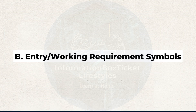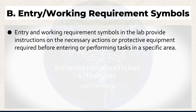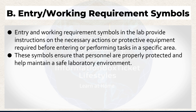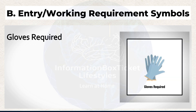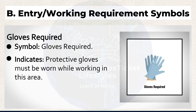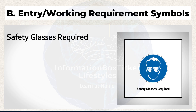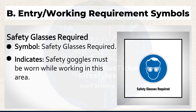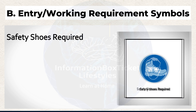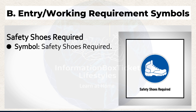B. Entry and working requirement symbols in the lab provide instructions on the necessary actions or protective equipment required before entering or performing tasks in a specific area. These symbols ensure that personnel are properly protected and help maintain a safe laboratory environment. Gloves Required symbol indicates that protective gloves must be worn while working in this area. Safety Glasses Required symbol indicates that safety goggles must be worn while working in this area.